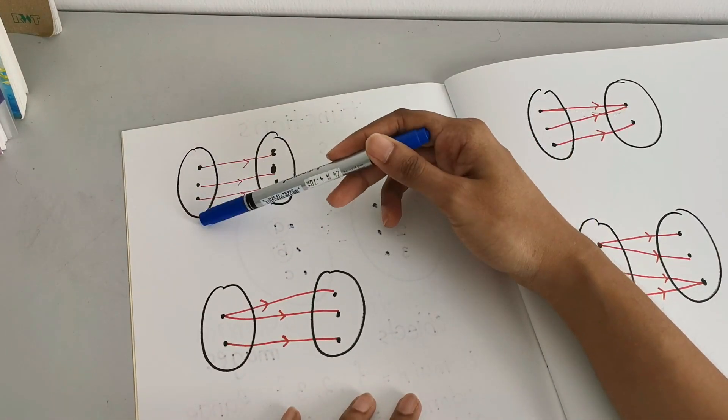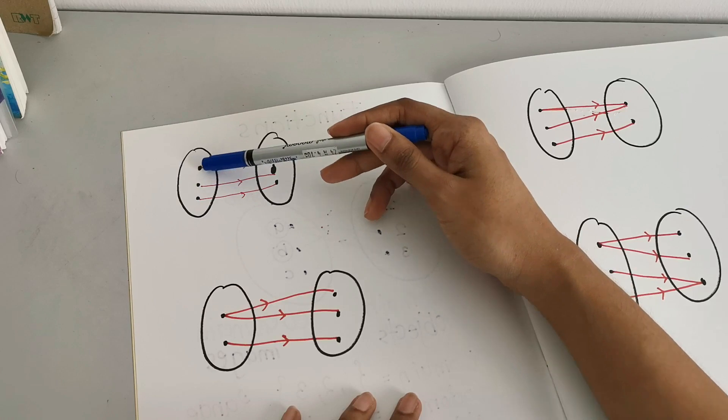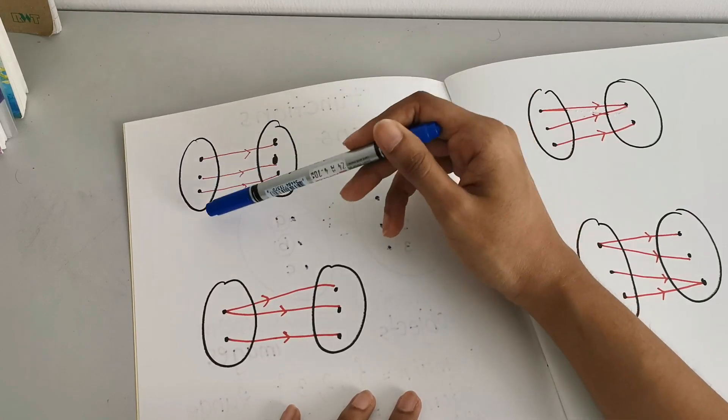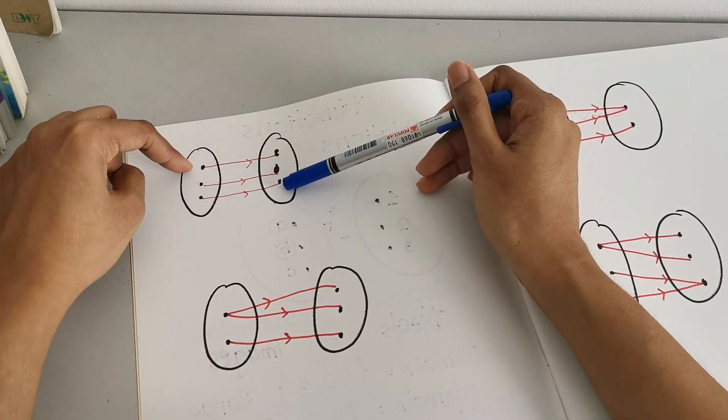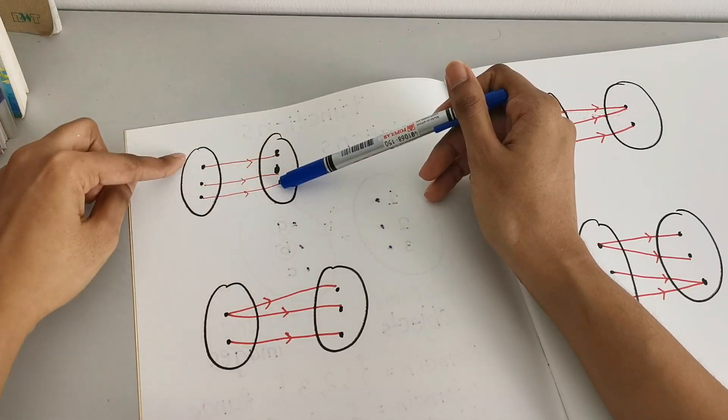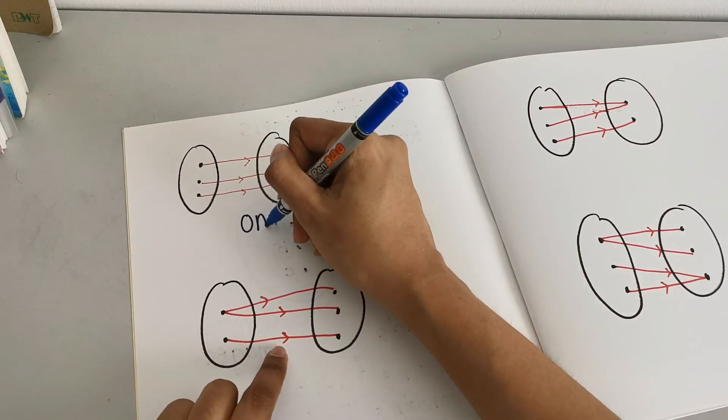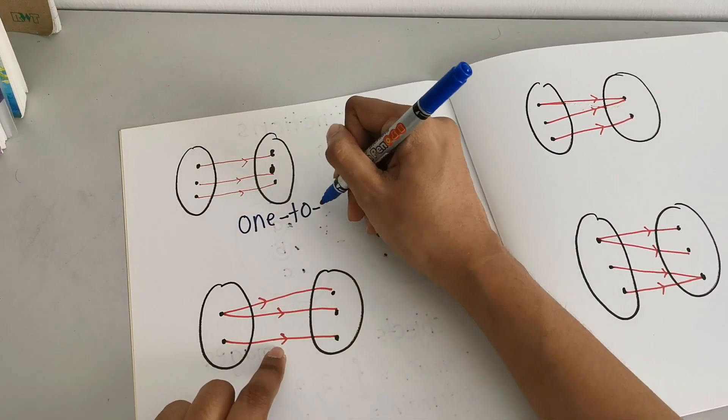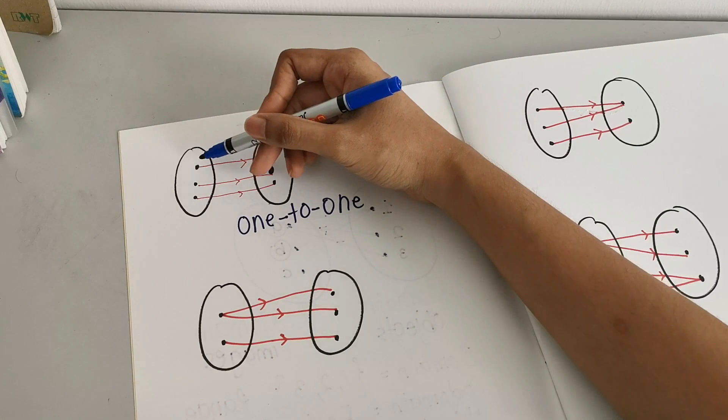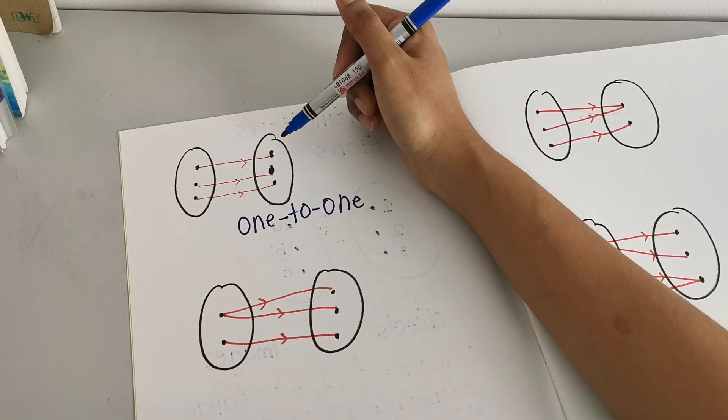So the first diagram, we have all the objects mapped to one image each. As you can see, this is 1, this is 1. So here, we say this as 1 to 1 relation, because 1 object is only mapped to 1 image.